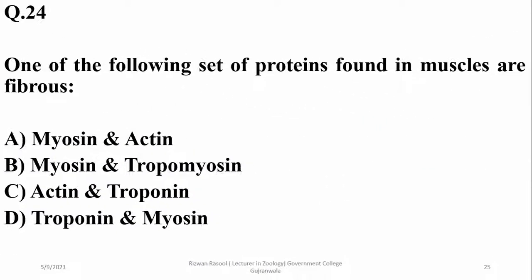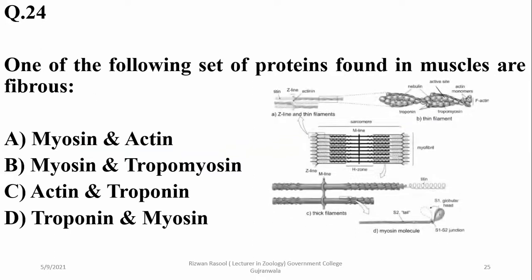Which of the following set of proteins found in muscles are fibrous? It is the set of myosin and tropomyosin — they are fibrous proteins. Actin and troponin are globular proteins.